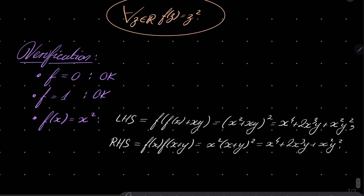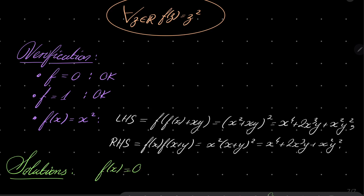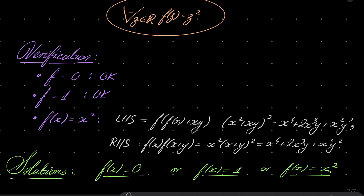So all in all, we have exactly three solutions: f(x) is constantly zero, or f(x) is constantly one, or f(x) = x² (a quadratic function). This closes our problem. Thank you very much for watching. I hope that you've learned something new this time, and I will see you next time. Goodbye.